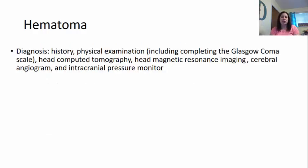How do we diagnose a hematoma? A history and physical exam including the Glasgow Coma Scale, a head CT, head MRI, and they may do a cerebral angiogram to look at how the blood vessels are doing — where the tears may be, whether it's an artery or a vein, and whether there's a stroke. They also measure and monitor intracranial pressure to make sure it does not continue to increase.